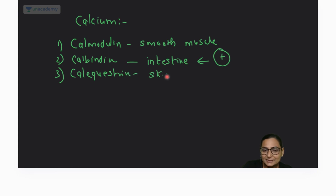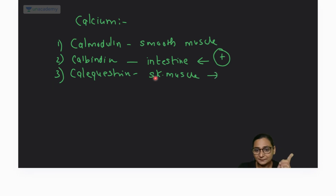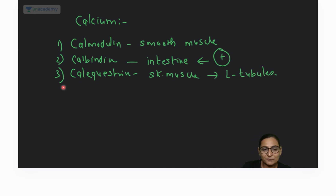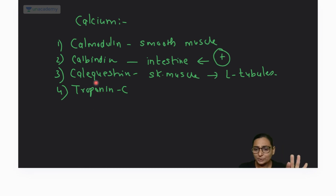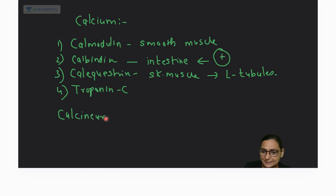The third confirmed calcium binding protein is calsequestrin, present in the skeletal muscles. Fourth is troponin C. These four — calmodulin, calbindin, calsequestrin, and troponin C — are my confirmed calcium binding proteins with no doubt. The problem comes if calcineurin and dystrophin are given as options.